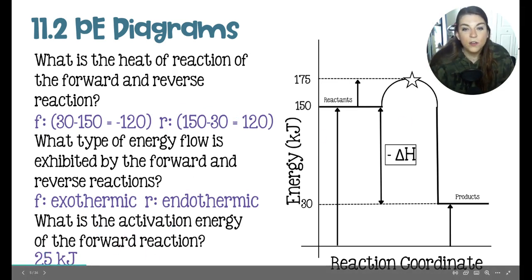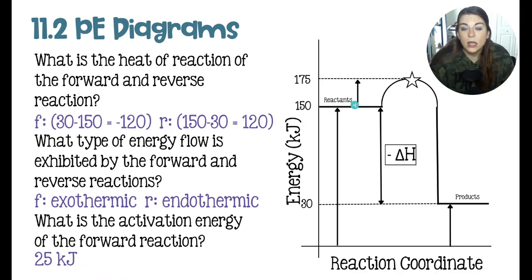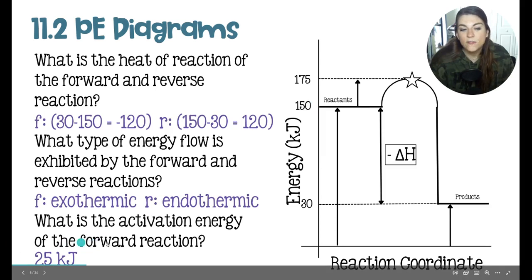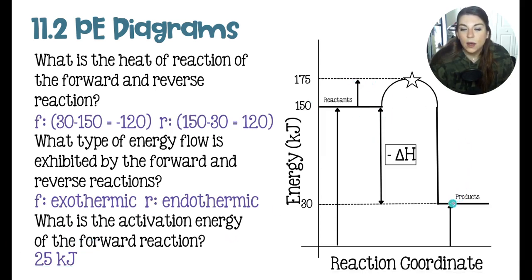And then the activation energy of the forward is that these are the reactants here, and you need this much energy in order to get the reaction to start. And that would be the 175 minus the 150, giving us 25 kilojoules for the forward. The reverse would be 175 minus 30, giving us 145 for that activation energy. No, 135.